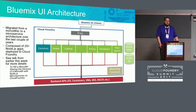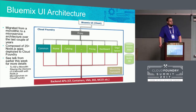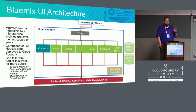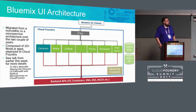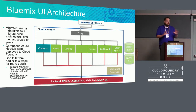The Bluemix UI architecture is a microservice architecture. If you were here yesterday, you saw this same diagram. We started off as a monolithic application — a single Java backend serving a single page app using the Dojo JavaScript framework. Over the last couple of years, we've more or less gotten rid of the Java app and have, like I said, about 25 to 30 Node.js microservices.